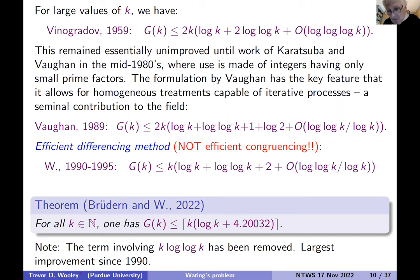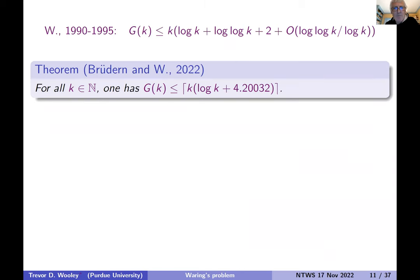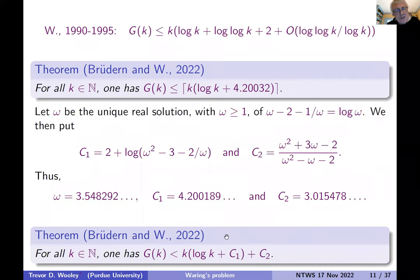And what I'd like to highlight is that progress in this subject has been very slow. So since Vinogradov, we had rather little progress for 30 years, and then another 30 years have gone by more than that. And at least we've saved the log log k term. So the ideas are applicable for other topics as well.